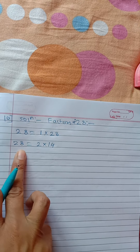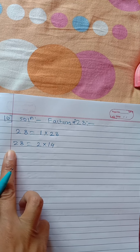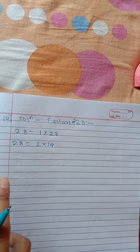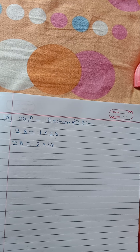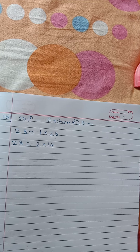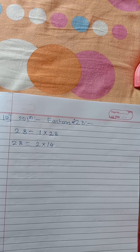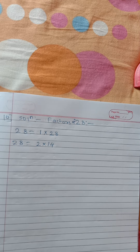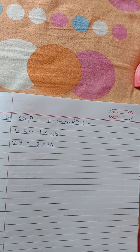28 does not come in the table of 3. You can also verify by division: 28 divided by 3 gives remainder 1, not 0, so 3 is not a factor of 28. Next number is 4. Is 4 a factor of 28? Yes — 4 sevens are 28, so 28 comes in the table of 4. Therefore 4 and 7 are factors of 28.